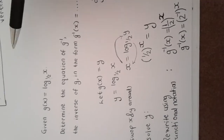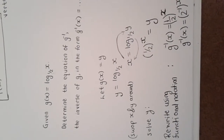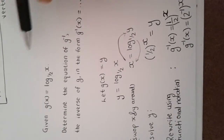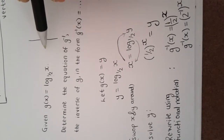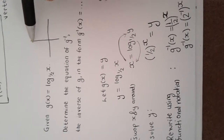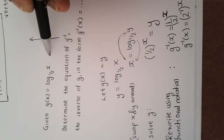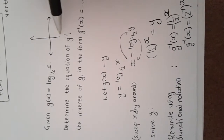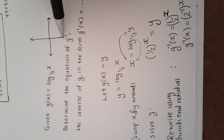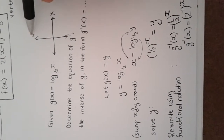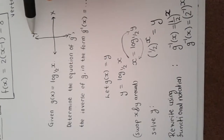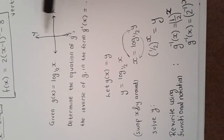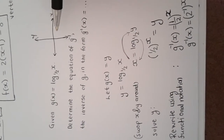Now let's quickly talk about these two functions. For g(x), we have a logarithm whose base is between zero and one. Remember that for the logarithmic function, the y-axis is always its asymptote.